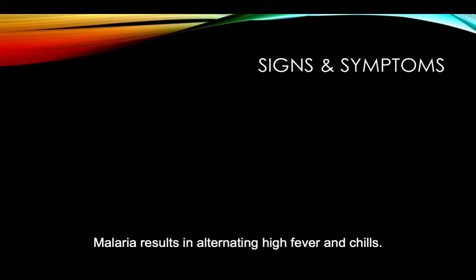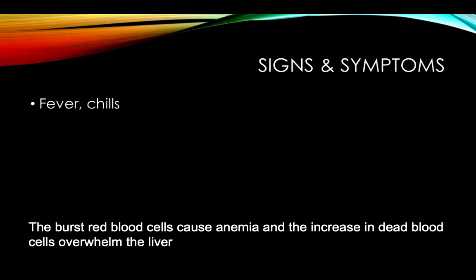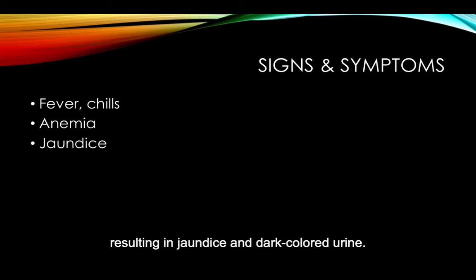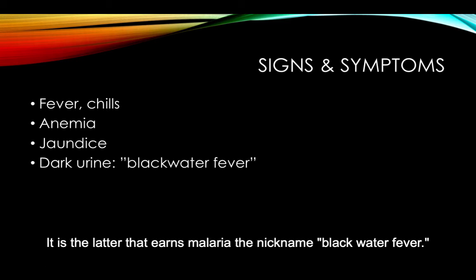Malaria results in alternating high fever and chills. The burst red blood cells cause anemia, and the increase in dead blood cells overwhelms the liver, resulting in jaundice and dark-colored urine. It is the latter that earns malaria the nickname black water fever.